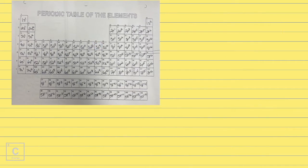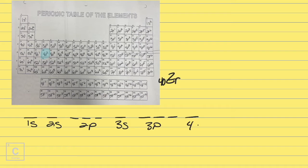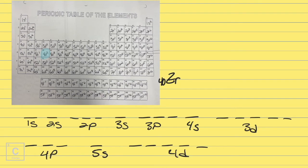Let's do the whole thing again for zirconium. Zirconium is number 40, and we're going to end with 4d². Starting from the beginning: 1s, 2s, 2p, 3s, 3p, 4s, 3d. After 3d we've got 4p, after 4p we've got 5s, and after 5s we get 4d — and that is where we're going to end. Using the periodic table is handy — I didn't have to count electrons; I knew exactly how I needed to build it before I even started.